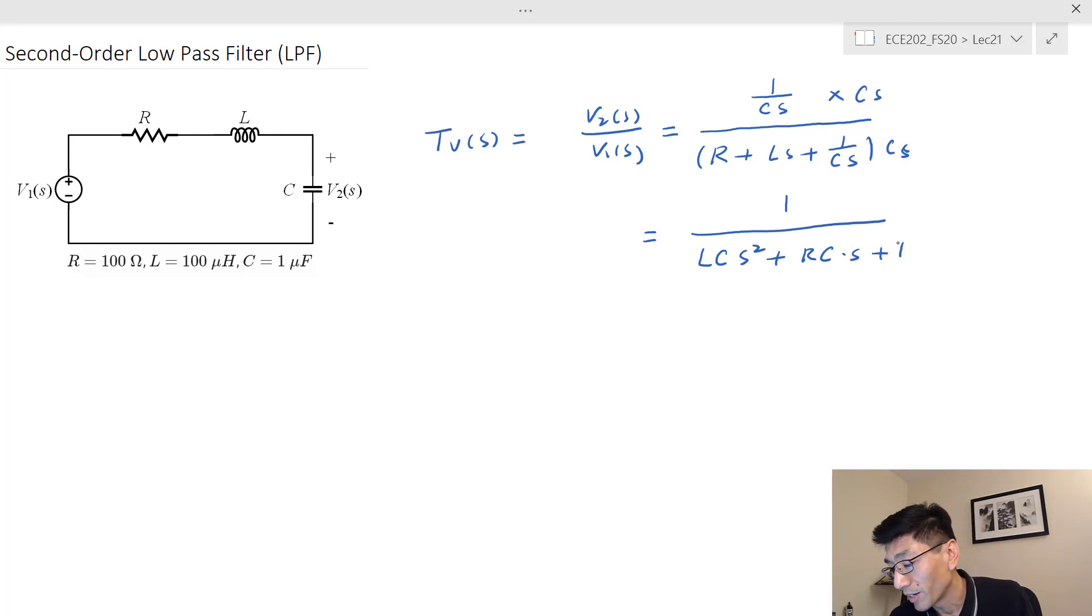Then we have R times C times s plus one. This actually is the ideal form we would like to have. If we compare to the general form, this should be equal to something like s² over ω₀² plus 2ζ s over ω₀ plus one.